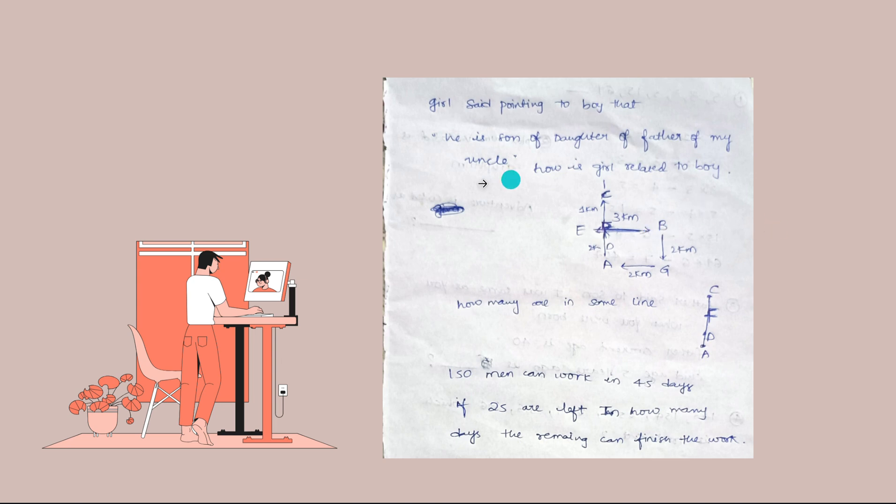A few other questions I gathered from my friends: A girl said, pointing to the boy, that 'he is the son of daughter of father of my uncle.' That means he is the son of whom? A woman who has a father, and that father is father of her uncle. I might confuse you, but have a look at it. He is the son of daughter of father of my uncle - how is the girl related to the boy? This is the question and you have four options like brother, nephew, brother-in-law, something like that. You have to choose one of them.